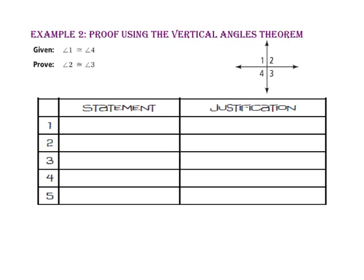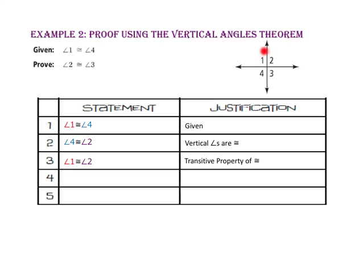In example 2, let's use the vertical angles theorem in a proof. We want to prove that angle 2 is congruent to angle 3, given that angle 1 is congruent to angle 4. Start with the given. Next, angle 4 and angle 2 are vertical angles, so they are congruent. Since angle 1 and angle 2 are both congruent to angle 4, they are congruent to each other by the transitive property of congruence. Angle 1 is congruent to angle 3 because they are vertical angles. Finally, because angle 2 and angle 3 are both congruent to angle 1, they are congruent to each other by the transitive property of congruence.